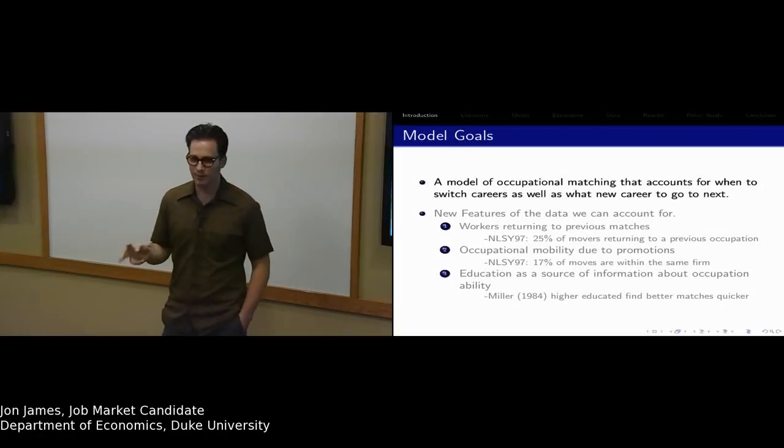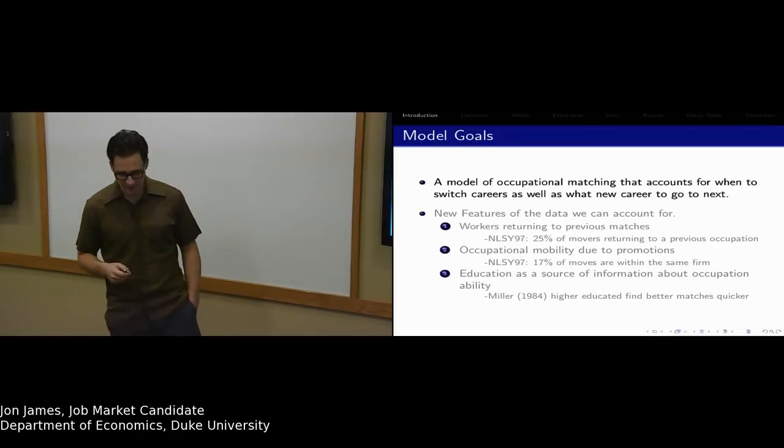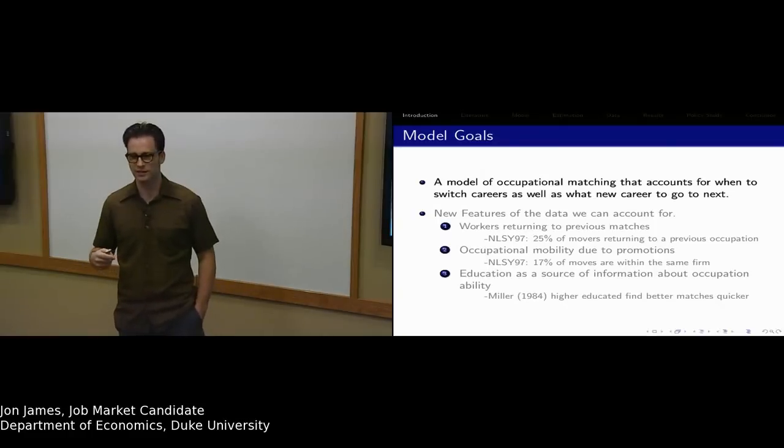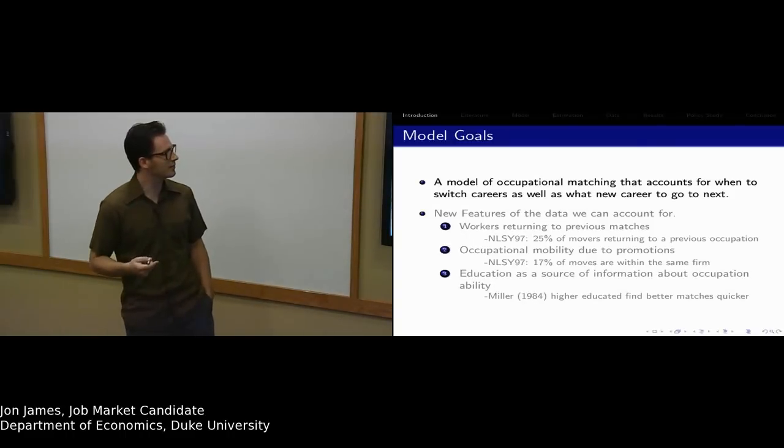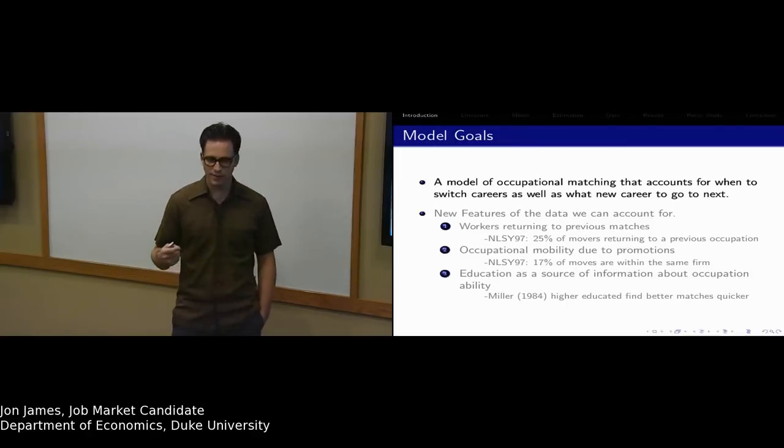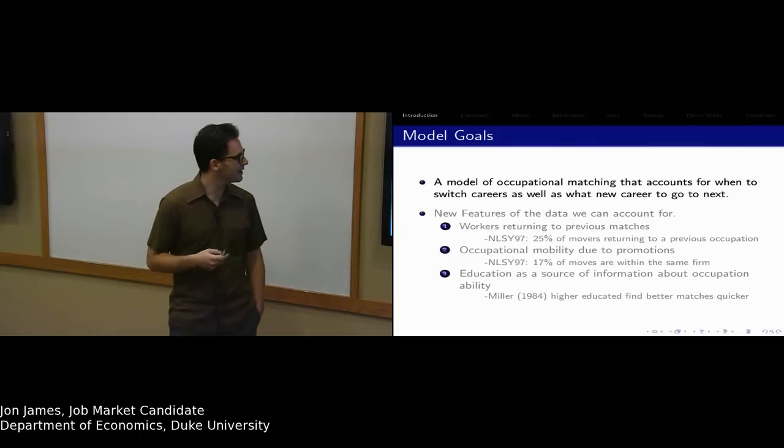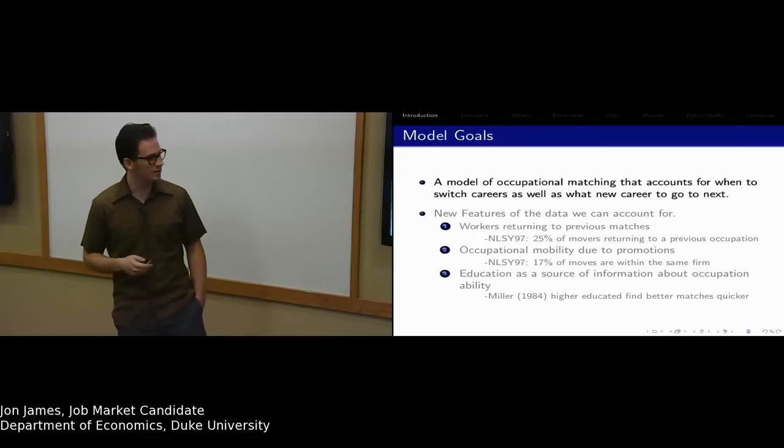I'd like to talk about some of the goals for the model I developed in this paper. The previous literature tends to only view the worker's decision along a single dimension: when to change careers. What I want to do is have a model of occupational matching that accounts for when to switch careers, but also what new career to go to next. When I look along the second dimension, there are some new features of the data that we can capture that we can't with current models.